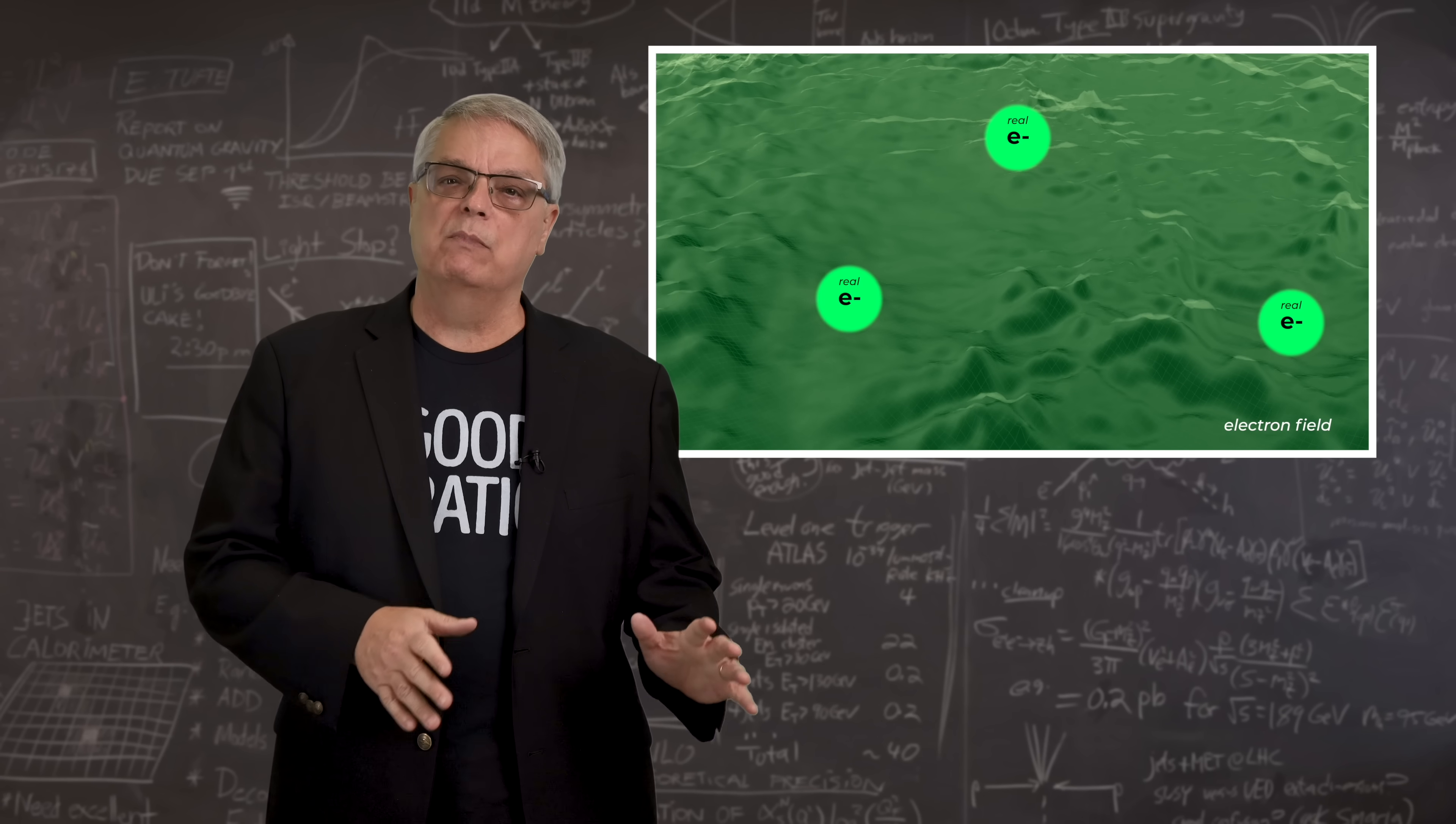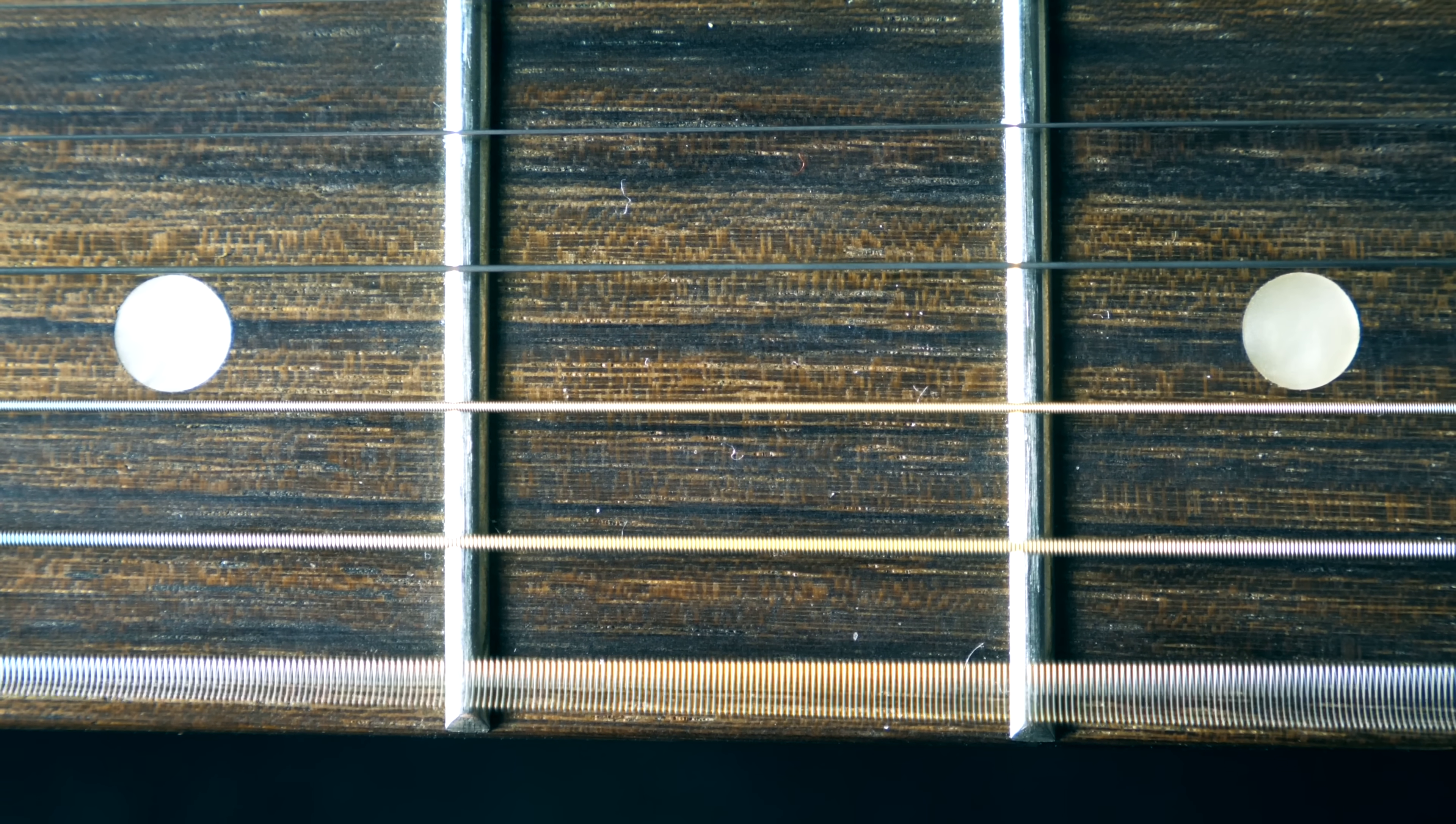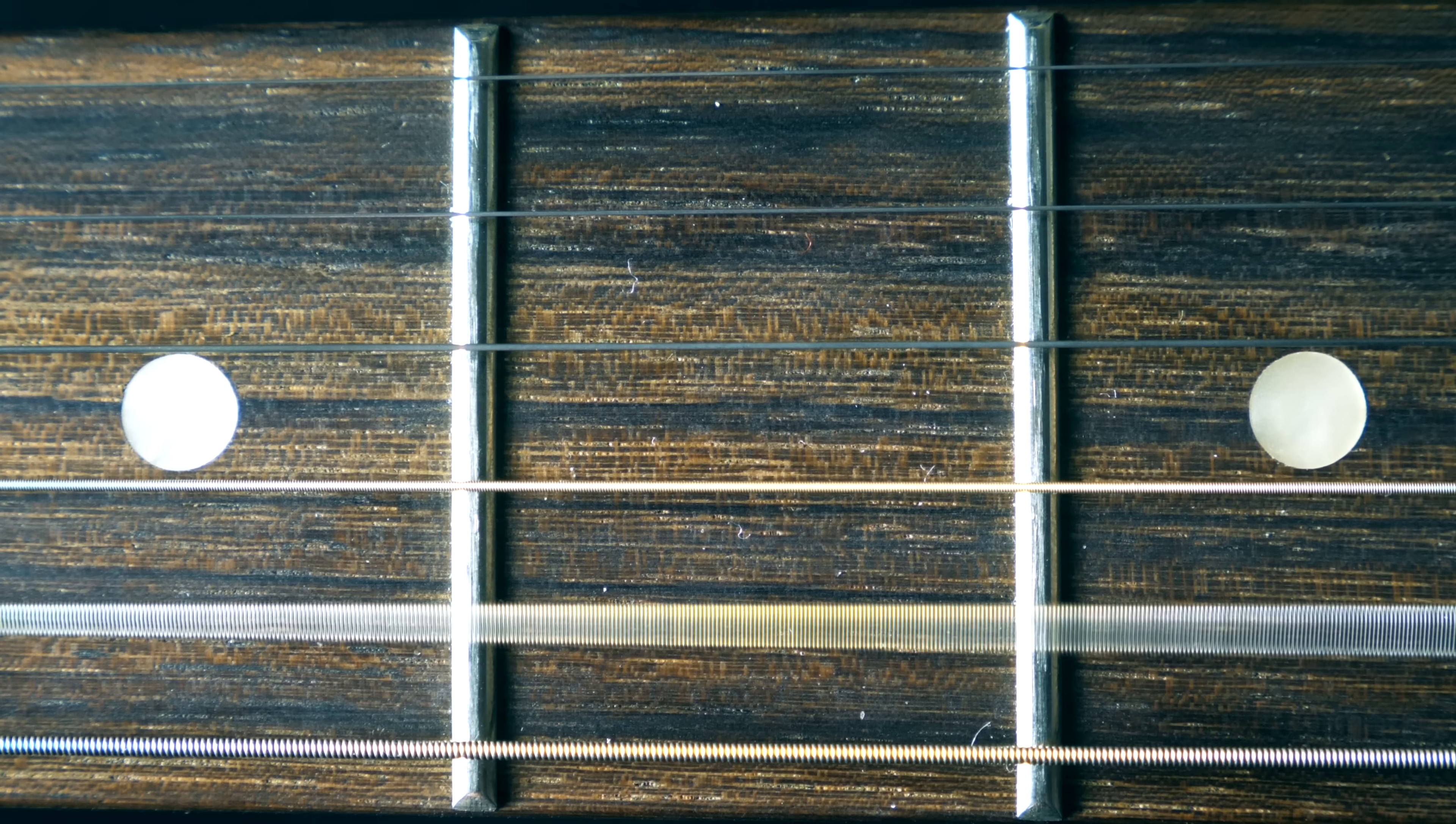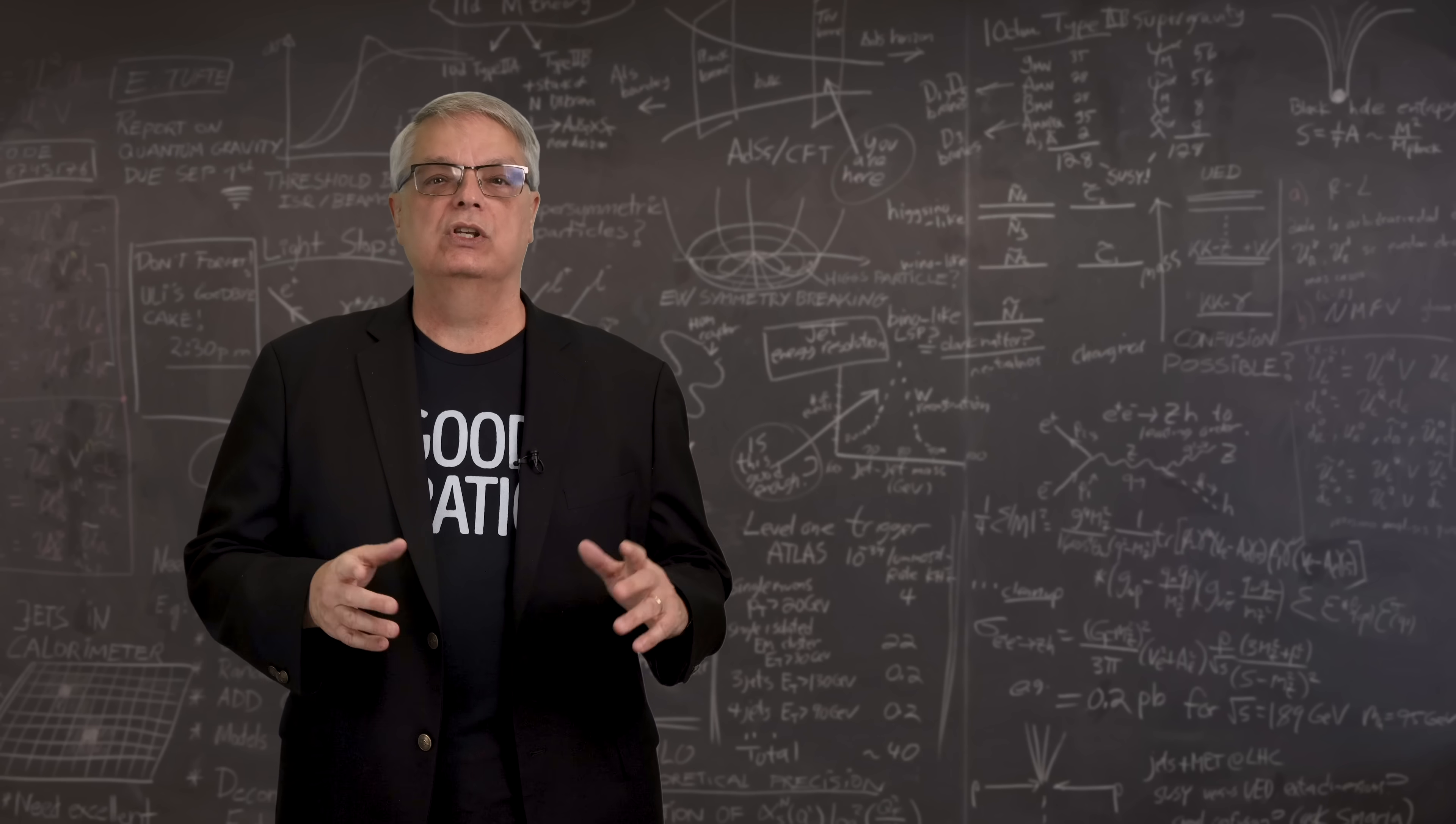Precisely how it vibrates is determined by the properties of the field. It's like how the lowest note on a guitar string depends on the length of the string, the material it's made of, and how tightly it's stretched. So that's the key point. Electrons are specific vibrations of the electron field.